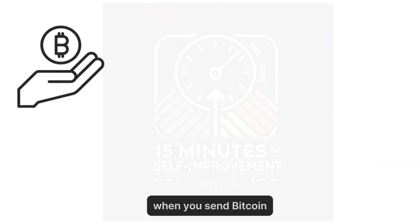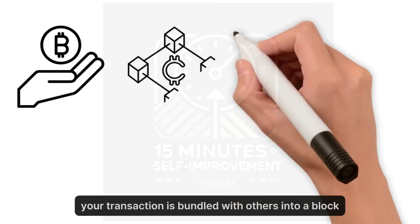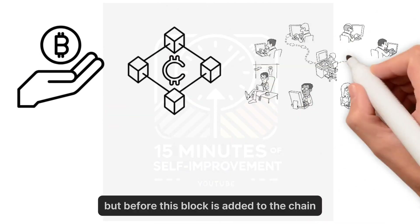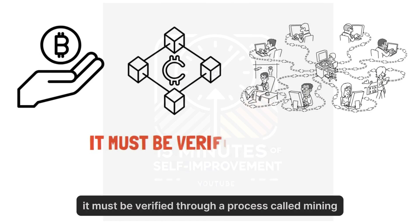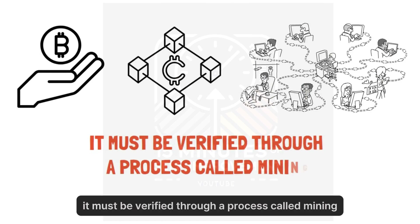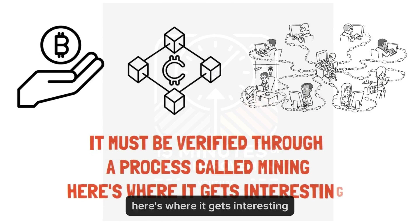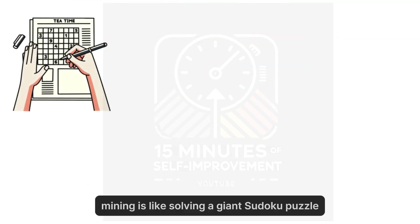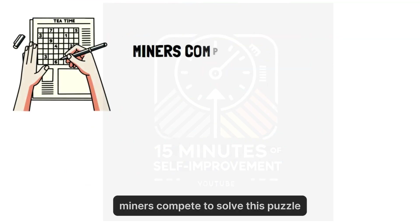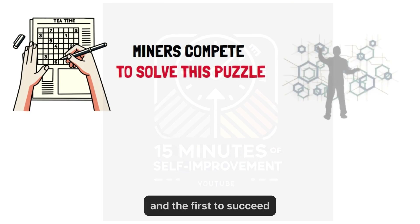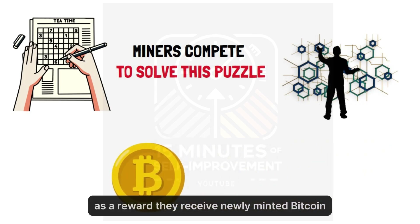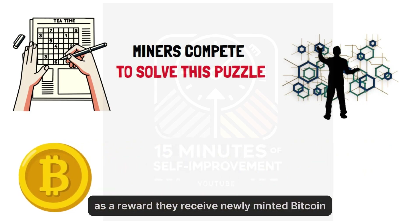When you send Bitcoin, your transaction is bundled with others into a block. But before this block is added to the chain, it must be verified through a process called mining. Mining is like solving a giant Sudoku puzzle — miners compete to solve this puzzle, and the first to succeed gets to add the block to the chain. As a reward, they receive newly minted Bitcoin. This is how new coins enter circulation.